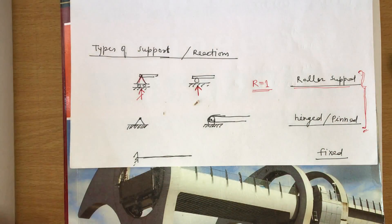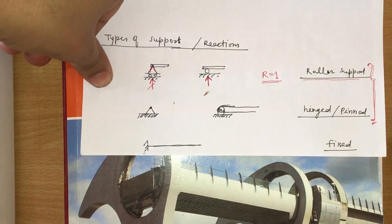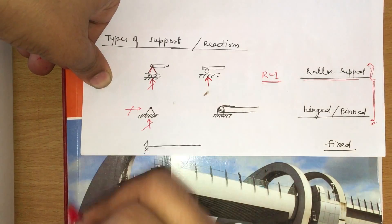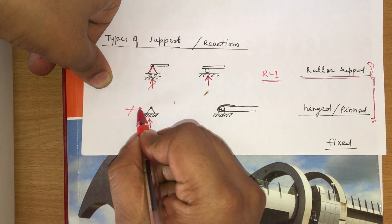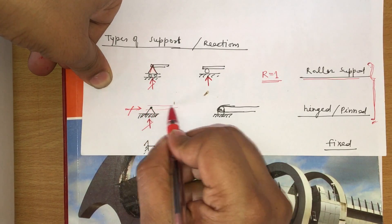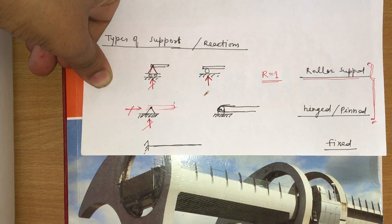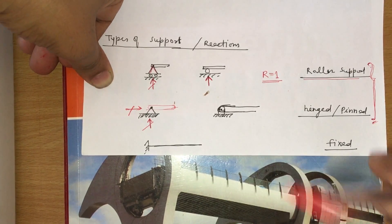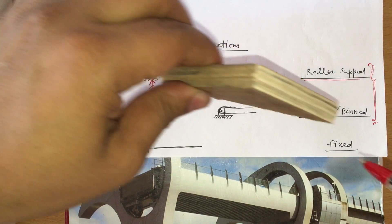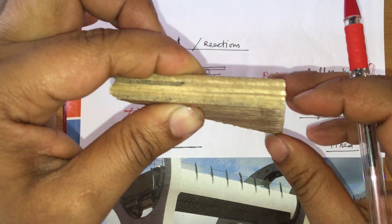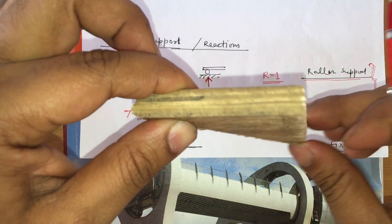At a hinge joint you can transfer a pull force or a load, and rotational effect is also present. Hinge supports are generally found below bridges and in many other examples. Two reactions are produced — both a horizontal reaction and a vertical reaction — but the rotational effect (moment) will be zero.